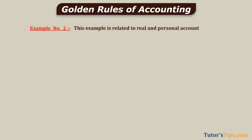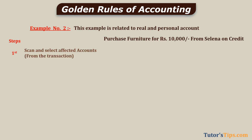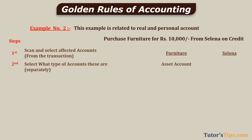Example number two: this example is related to Real and Personal Account. Purchase furniture for 10,000 from Selena on credit. We will repeat all six steps. Step one: scan and select affected accounts. The first account is furniture and the second is Selena, because furniture is purchased on credit, meaning payment to Selena is pending, so it becomes our payable. Step two: furniture is an asset, so it is an asset account; Selena is a natural person, so it is a personal account.